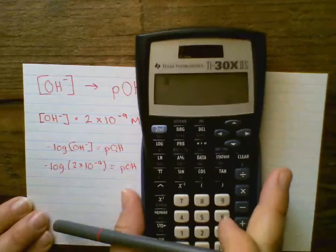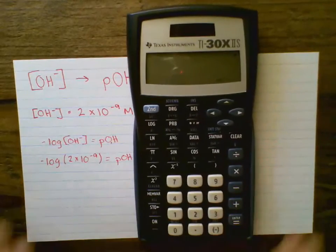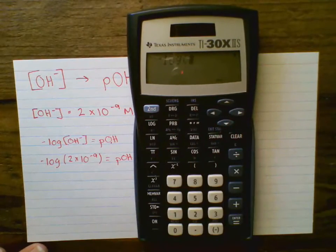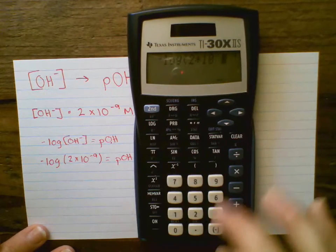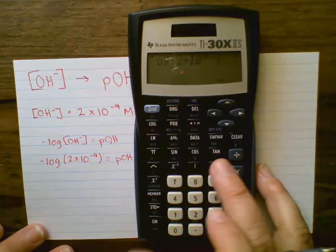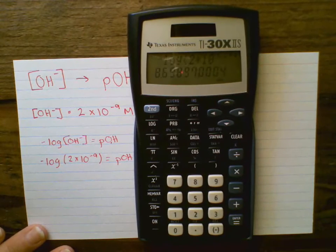Again, I'm going to put this into my calculator. So negative log of 2 times 10 to the negative 9th, close parentheses, enter.